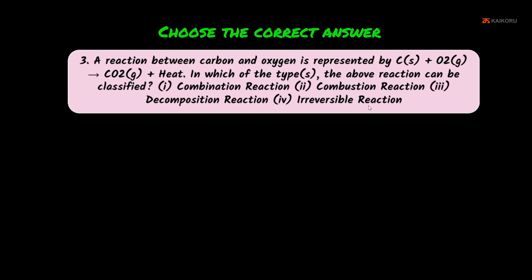In this equation, carbon plus oxygen — two elements give one product, carbon dioxide. So this is a combination reaction — first option is correct. It also involves oxygen, so it is a combustion reaction — second option is also correct.